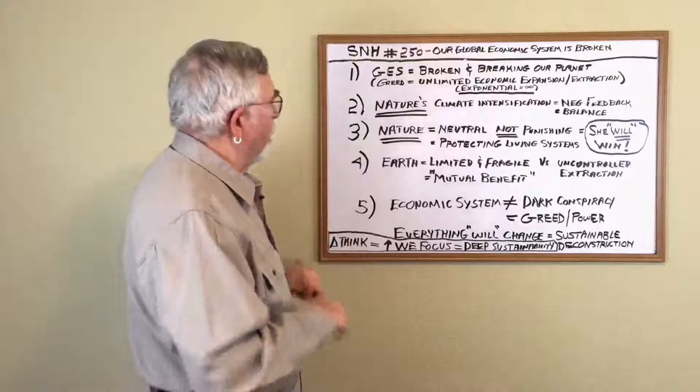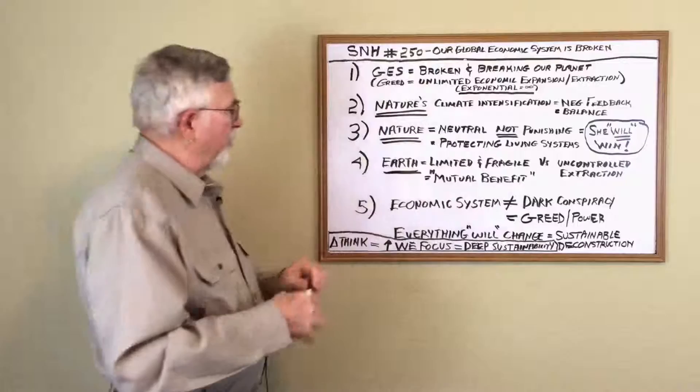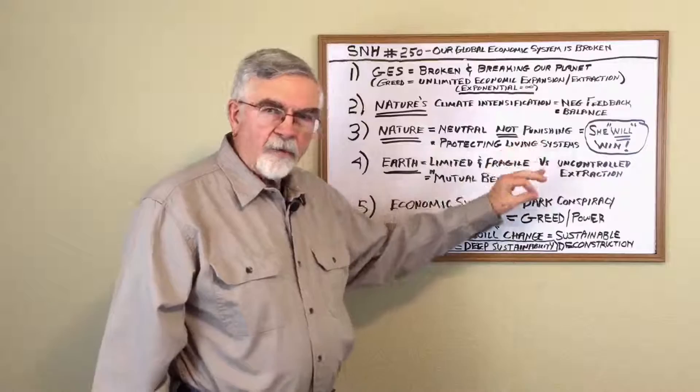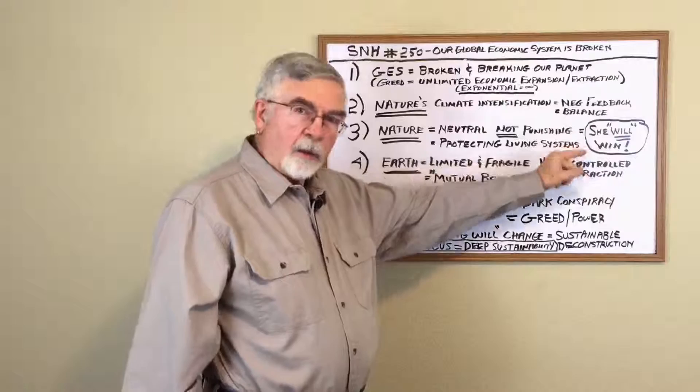So, one of the things that we need to begin to do as a species is to begin to recognize that the planet is both limited and fragile. And it is protected by a very powerful system called natural laws or nature.